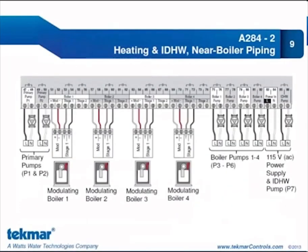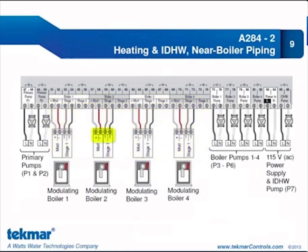Taking a look at the bottom half of the control for this application, starting on the left-hand side, we have our two primary pump connections with color coding to distinguish terminals. Then we have our four boiler banks — each boiler is modulating and all require the modulating signal as well as a power enable, so we connect the mod plus/minus terminals and stage 1 contacts to the TT contacts on the boiler. We have our four boiler pumps, power in at terminals 83 and 84, and lastly the connection for the indirect domestic hot water pump. All boiler pump terminals are dry contacts only with no powered outputs.